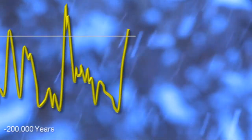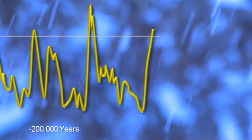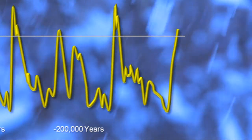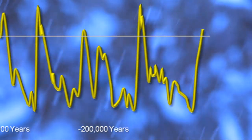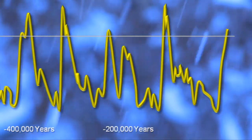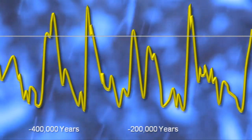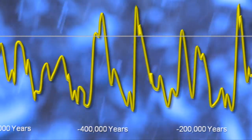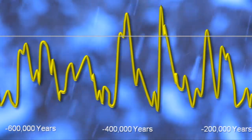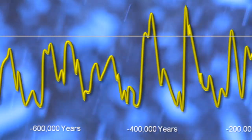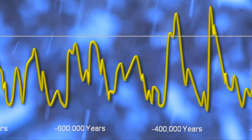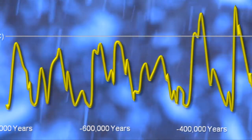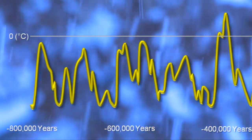Glacial formation is dependent upon the Earth's climate shifting from hot to extremely cold. Four glacial periods have occurred recently over the last 650,000 years, and there is evidence that the cycle of glacial formation has occurred for more than two million years.